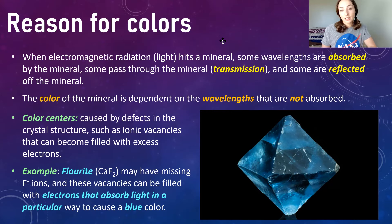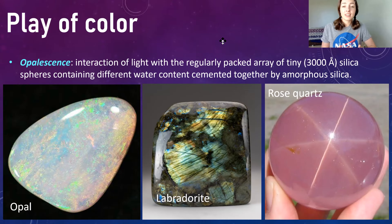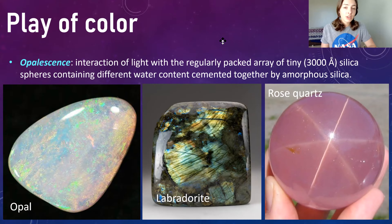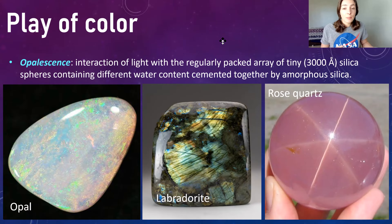The next thing we'll talk about is play of color, a really helpful identifier because not many minerals exhibit it. For example, opalescence in opal is due to interaction of light with regularly packed arrays of tiny silica spheres 3,000 angstroms in diameter containing different water content, cemented together by amorphous silica. Play of color is also observed in labradorite, a plagioclase feldspar exhibiting colors from blue to green to yellow to red — known as labradorescence. Rose quartz can also exhibit a six-rayed optical phenomenon known as asterism, from light reflected off minute inclusions arranged in a star-like pattern, also seen in star rubies and star sapphires.